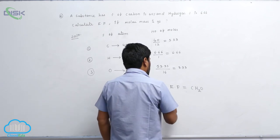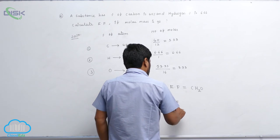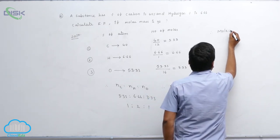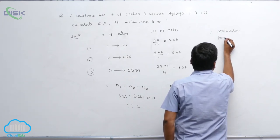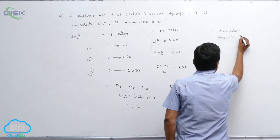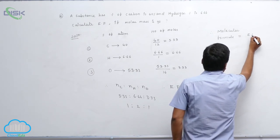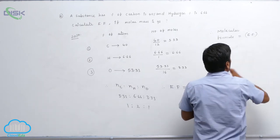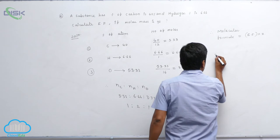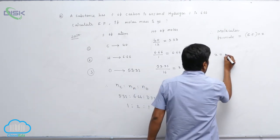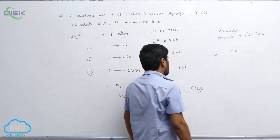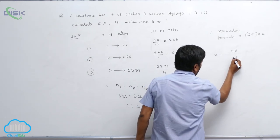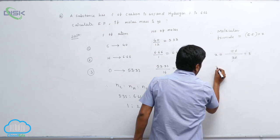Now for the molecular formula: molecular formula equals empirical formula multiplied by x. Here x equals the molar mass divided by the empirical formula weight. The empirical formula weight is: carbon 12, plus hydrogen 2 (2×1), plus oxygen 16 = 30. So x = 90 divided by 30 = 3.